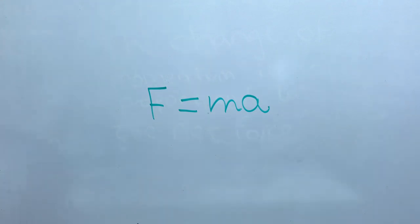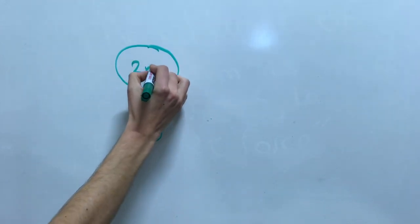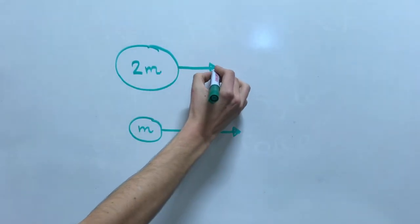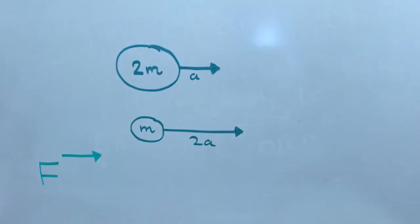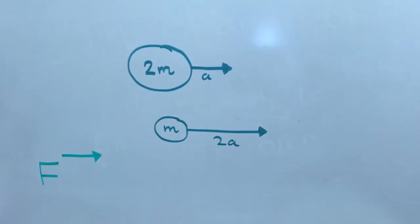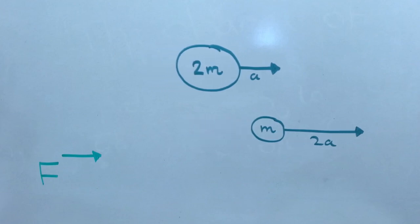This law is usually described by the equation force equals mass times acceleration. We can use two different objects of masses m and 2m and see how their acceleration changes given the same force. As you can see, the mass which is twice as light accelerates twice as quickly under the same force.